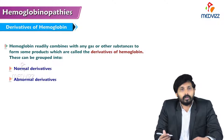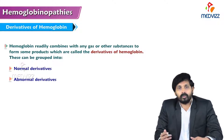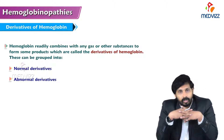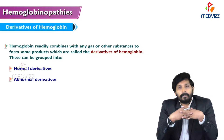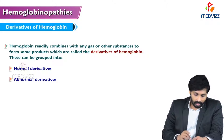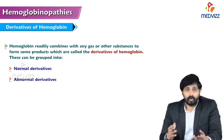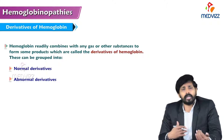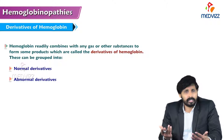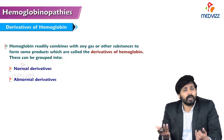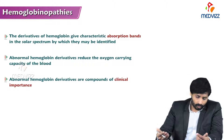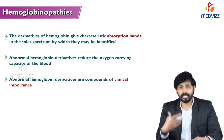In this video we'll talk about derivatives of hemoglobin. Hemoglobin molecules readily combine with any gas or other substances to form products called derivatives of hemoglobin. These can be grouped into normal — which occur during loading and unloading of oxygen — and abnormal, which form in the presence of poisonous gases or toxic substances, leading to deactivation of hemoglobin.